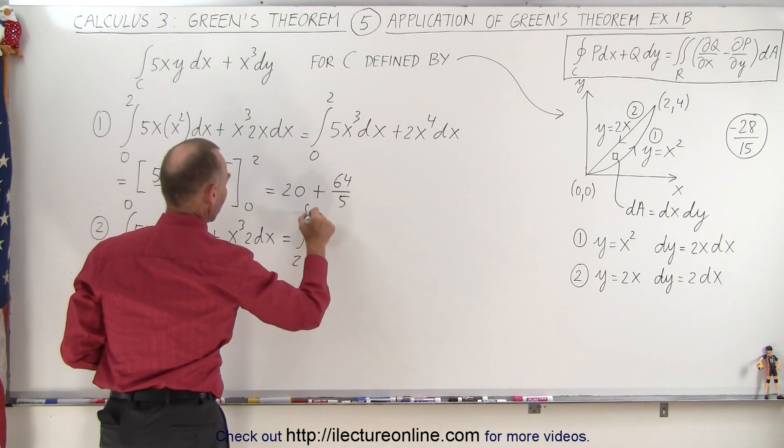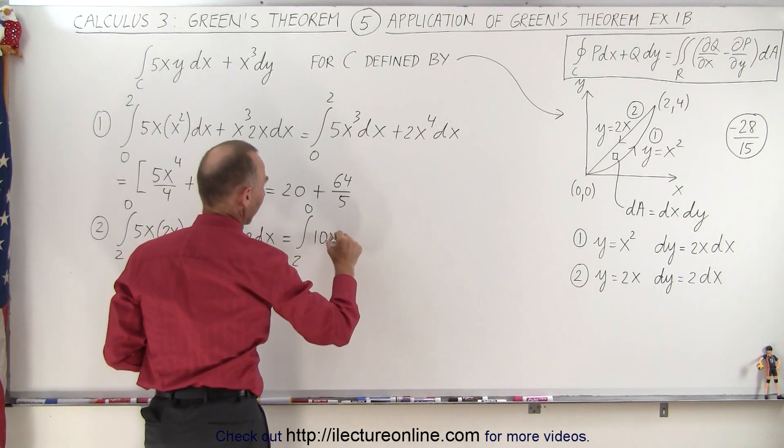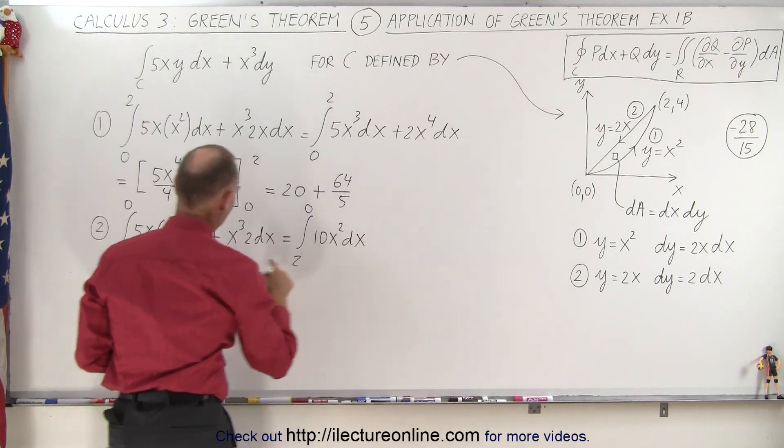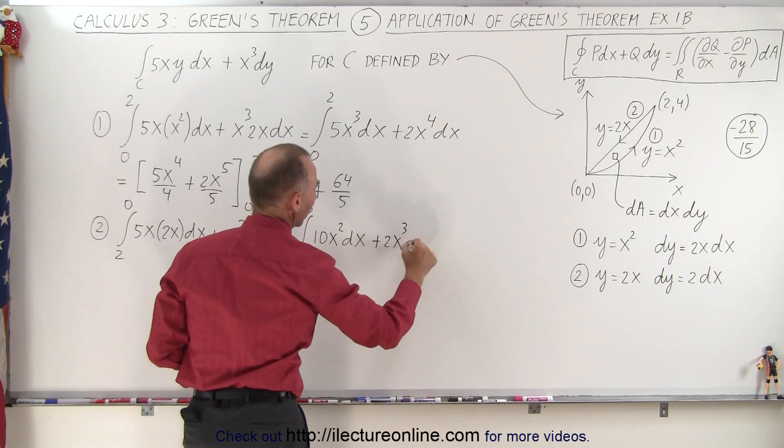Simplifying that, from 2 to 0, here we have 10x squared dx, and here we have 2x cubed dx, plus 2x cubed dx.